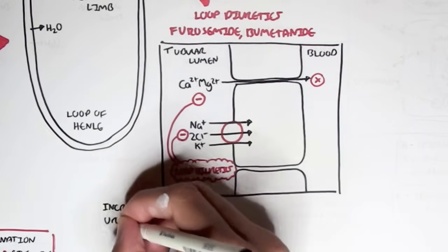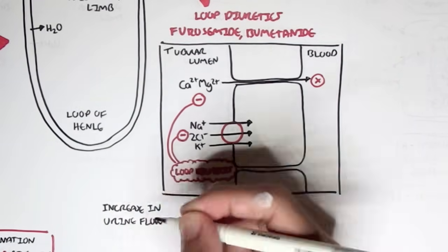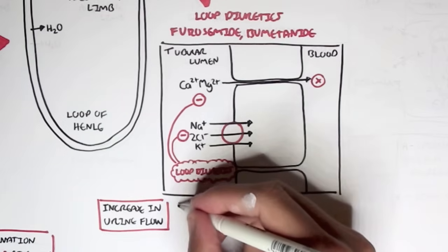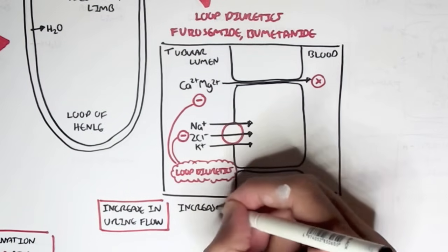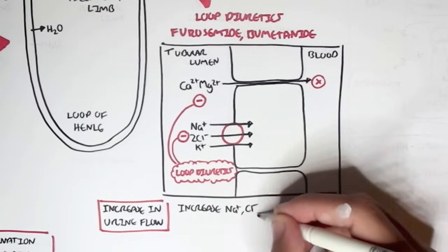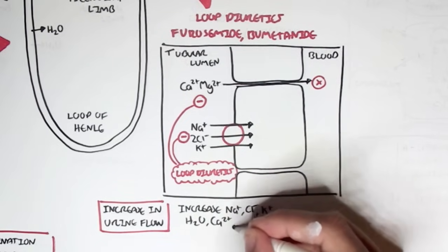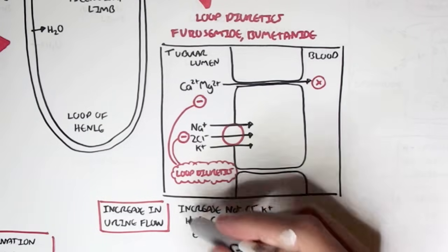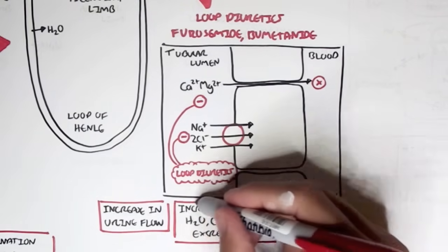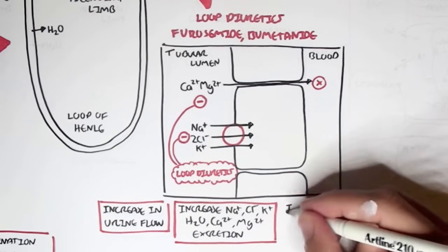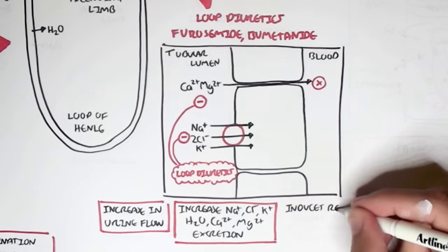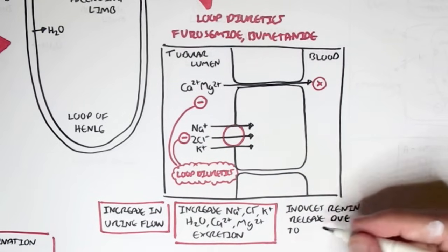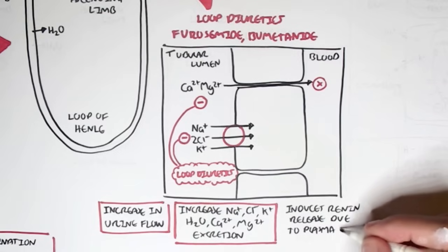Loop diuretics increase urine flow by preventing reabsorption. They increase excretion of sodium, chloride, potassium, water, calcium, and magnesium in the nephron. Because they increase excretion of these substances, they decrease plasma volume. Loop diuretics can actually induce renin release due to this plasma volume depletion, and renin will act to increase blood pressure.